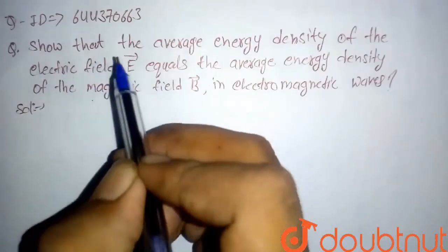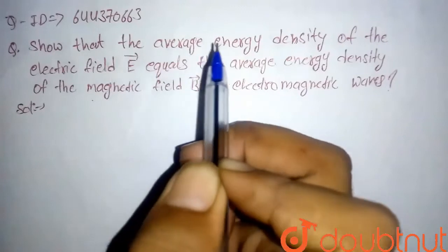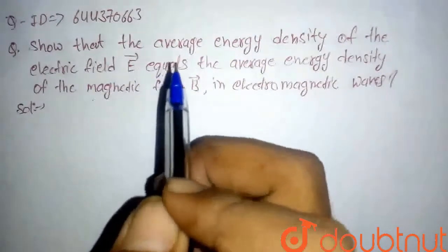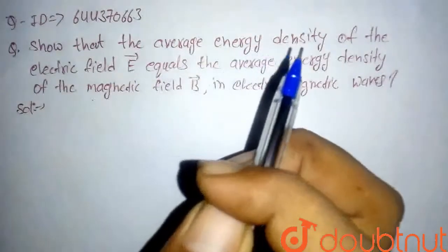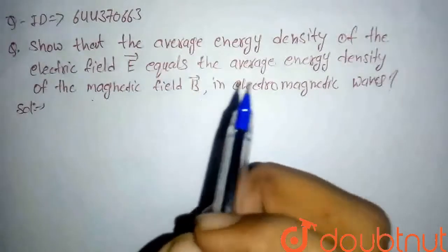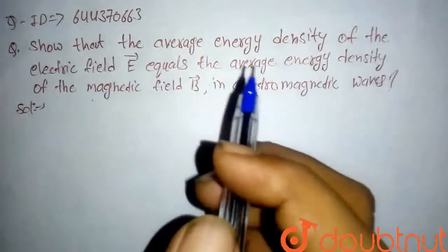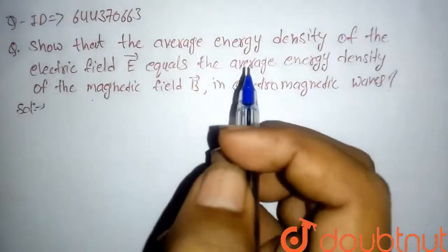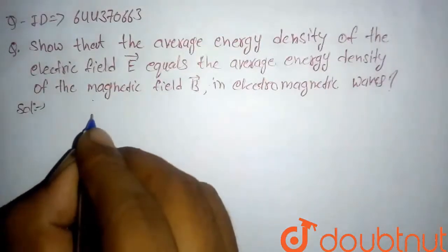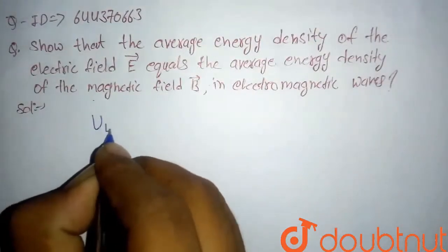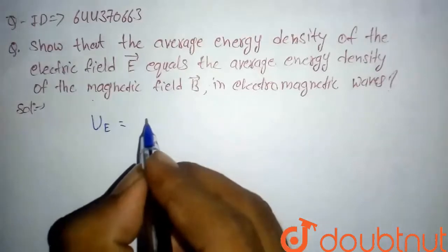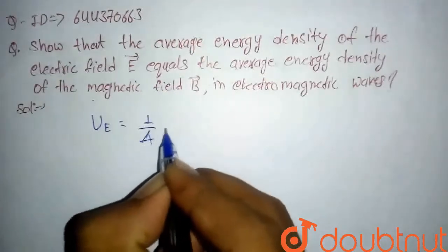Hello everyone. Today we have a question: show that the average energy density of the electric field equals the average energy density of the magnetic field in electromagnetic waves. So here we note the average energy density in the electric field is given by 1 by 4...